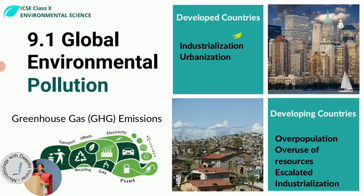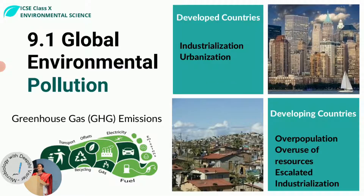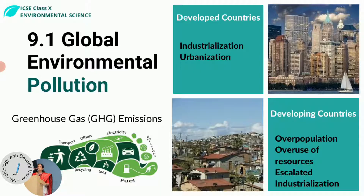Developed countries are adding to pollution through rampant industrialization and urbanization. All the technology and appliances they use on a regular basis is adding to pollution and resource depletion. On the other hand, developing countries' main problem is overpopulation. When there's too much population in a small piece of land, it leads to deforestation, overgrazing, and overuse of water resources.